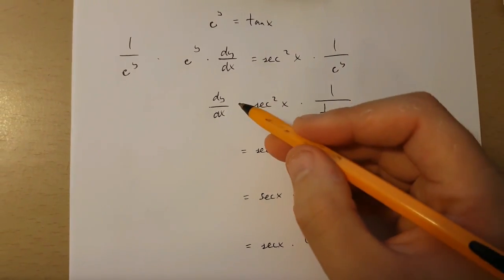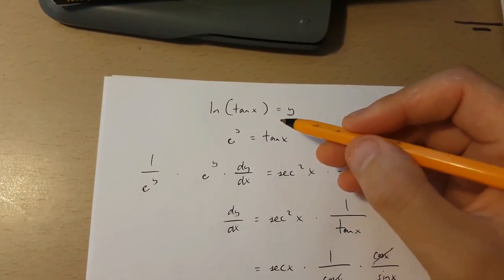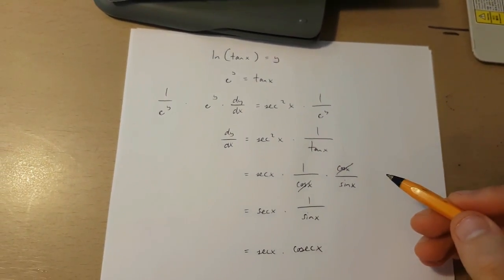And this is dy over dx, which is the derivative of y equals ln tan x.